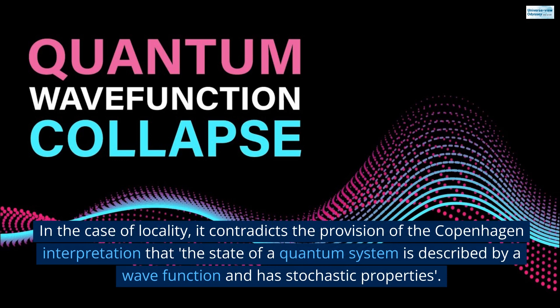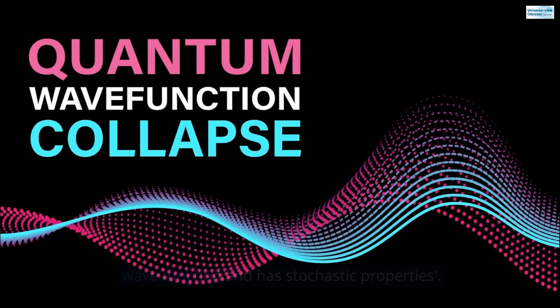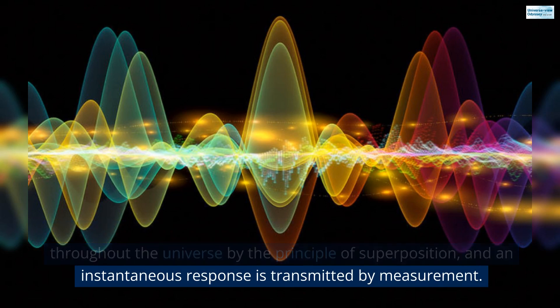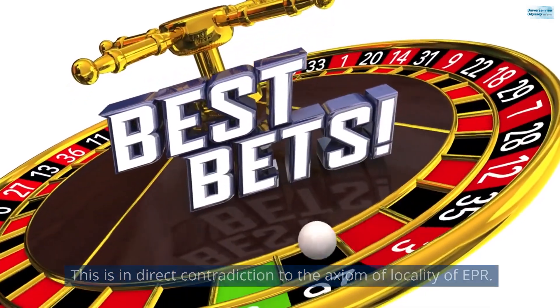In the case of locality, it contradicts the provision of the Copenhagen interpretation that the state of a quantum system is described by a wave function and has stochastic properties. It is assumed that the wave function has a probability to be spread throughout the universe by the principle of superposition, and an instantaneous response is transmitted by measurement. This is in direct contradiction to the axiom of locality of EPR.